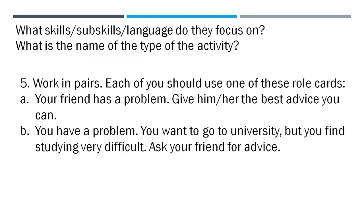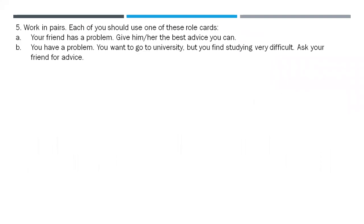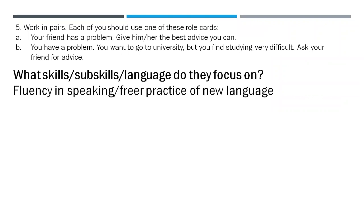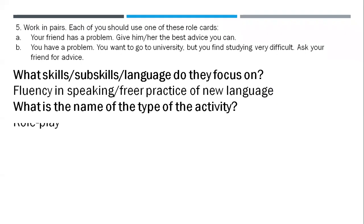Number five: working in pairs, each of you should use one of these role cards. A) Your friend has a problem — give him or her the best advice you can. B) You have a problem — you want to go to university but you find studying very difficult, ask your friend for advice. Here we have fluency in speaking or free practice activities about new language, and that is a role play.